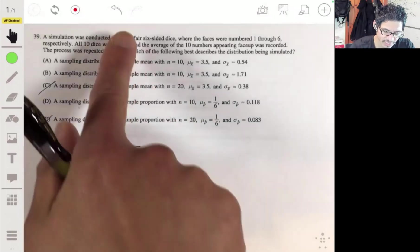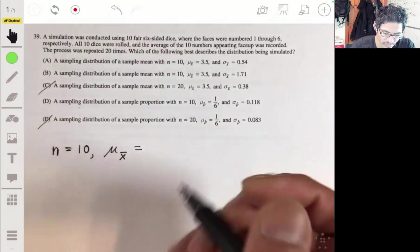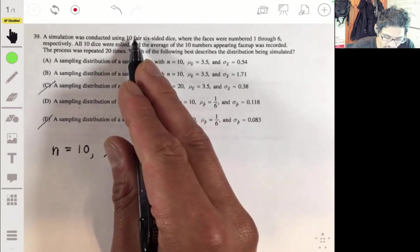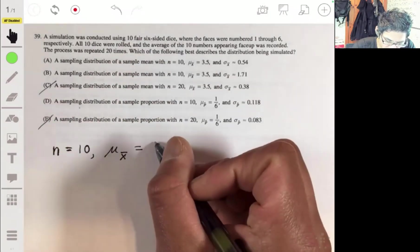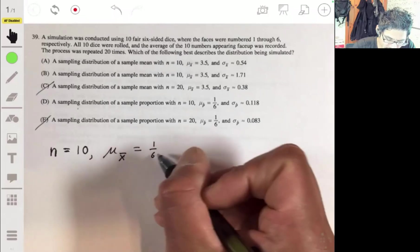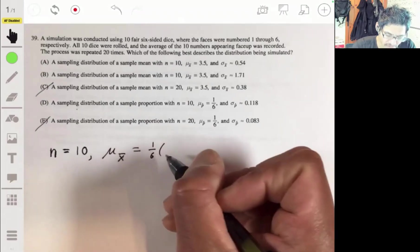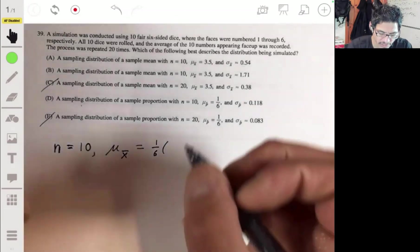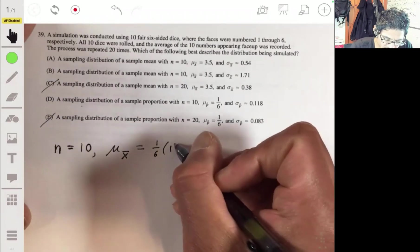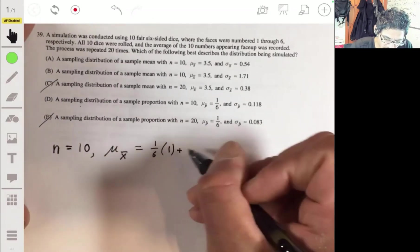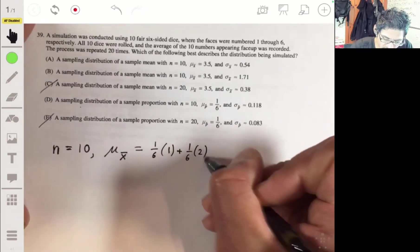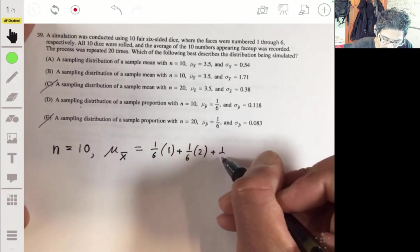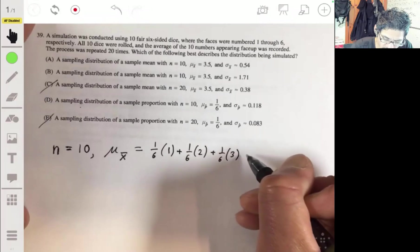We have 10 dice with numbers one through six on each one. On a dice, each number has the same chance of rolling. It's going to be one in six chance to roll a one, a one in six chance to roll a two, a one in six chance to roll a three, and so forth, all the way up to six.